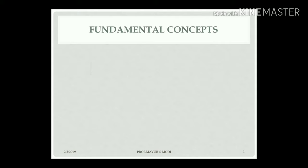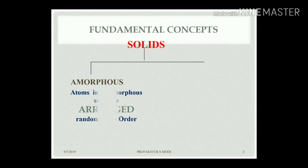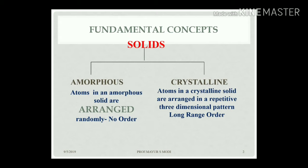Let us start with the fundamental concept of Imperfections in Solids. Solids are divided into two categories: amorphous materials, where atoms are arranged randomly with no repeated order, and crystalline materials, where atoms are arranged in a repetitive three-dimensional long-range order pattern. In amorphous materials, atoms randomly occupy space in the structure.